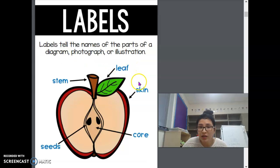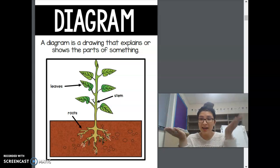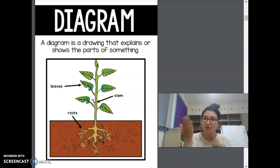Now, labels are just the words. So, labels, just the words. They're just the words that are telling the parts of the picture. Now, diagram is the picture and the labels explaining the picture. So, label is just the words explaining the picture, and diagram is the picture and the words.